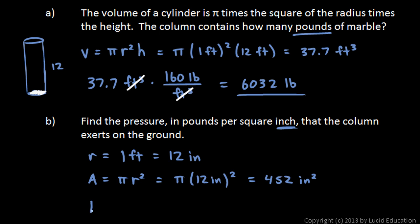Now we can calculate the pressure. Pressure is force divided by area. The downward force acting on this area is the weight of the column. 6032 pounds is pressing down and spread out over 452 square inches. And there you see pounds per square inch right there. And so we just do this calculation. 6032 divided by 452 comes out to 13. 13 pounds per square inch. That's the pressure that this column is exerting on the ground.